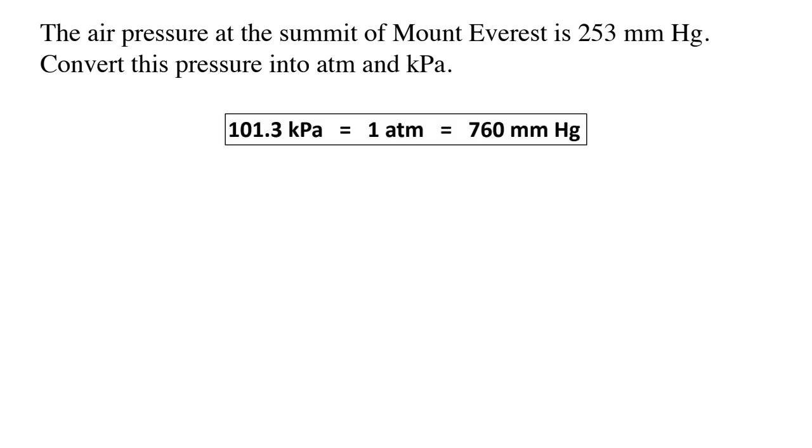Two older units are still commonly used, millimeters of mercury and atmospheres. Since these units are still used, we need to be able to convert between them. Here's how they relate.